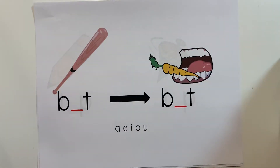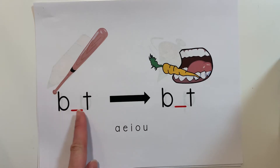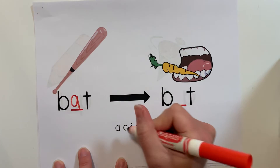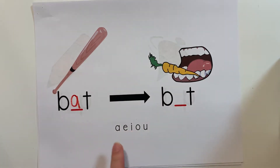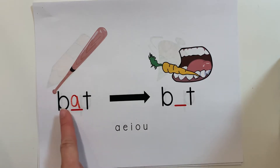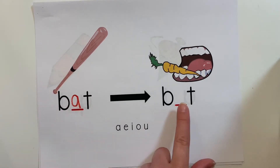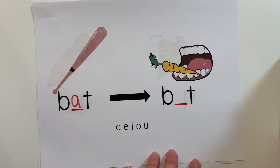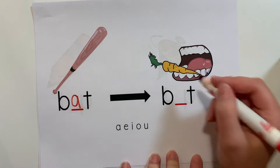What is this a picture of? Bat — B-A-T. I want to change that to bit — B-I-T. I'm not going to change my consonants, I'm going to change my vowel in the middle. What is my new middle sound for bit? IH.